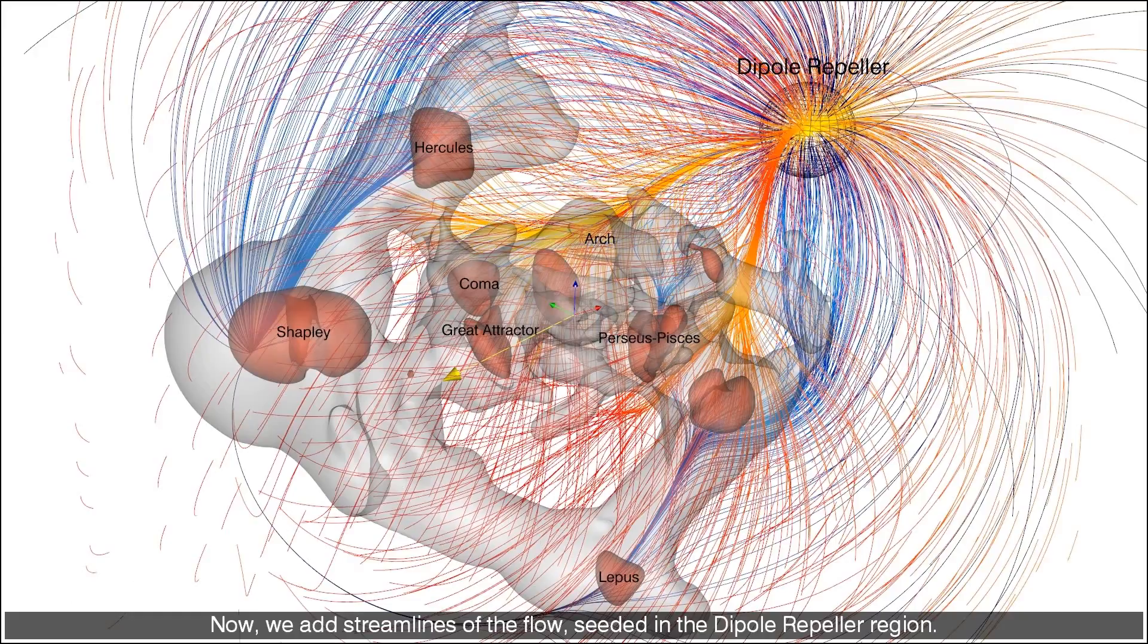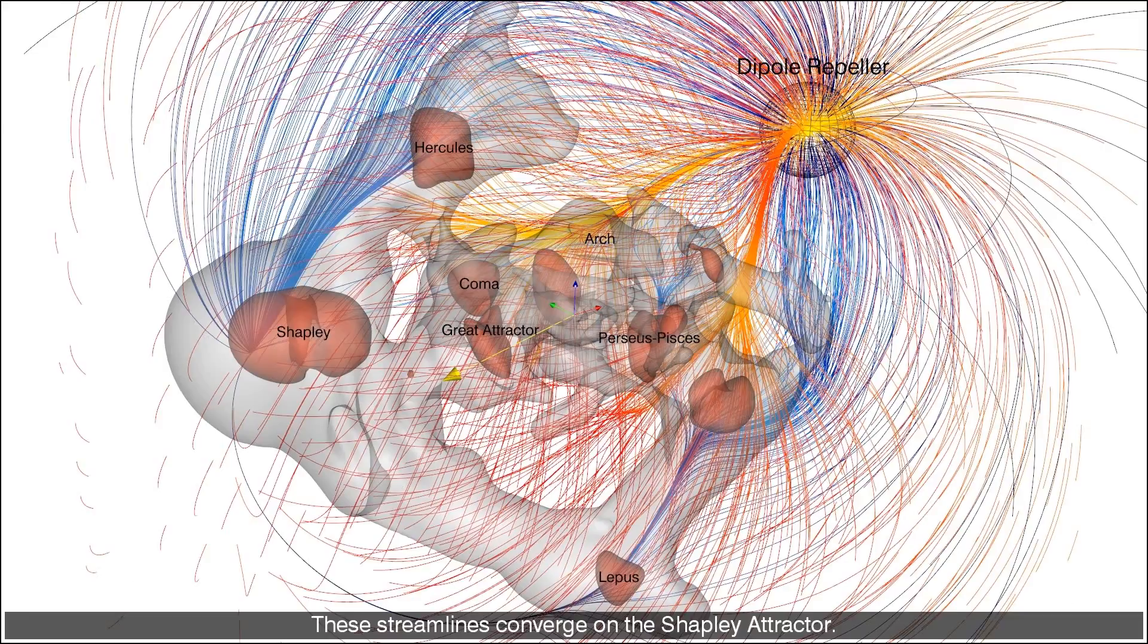Now we add streamlines of the flow seeded in the dipole repeller region. These streamlines converge on the Shapley attractor.